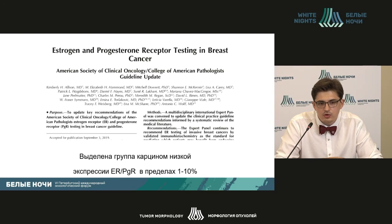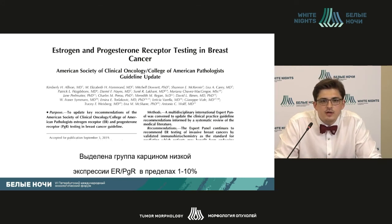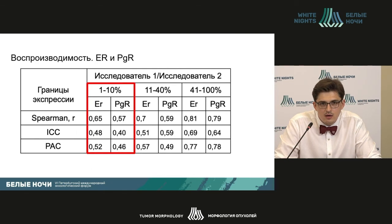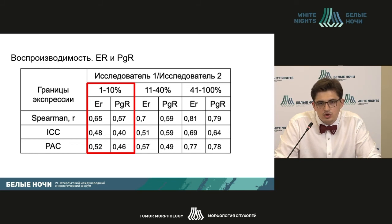Mindful of the new guideline published in September 2019, we identified a low expression group for estrogen and progesterone receptors of 1% to 10%. This group was identified because investigators showed that the benefits of endocrine therapy in those breast carcinomas are limited, and this group requires further study. We studied reproducibility of this indicator and demonstrated low reproducibility ratios in the 1% to 10% group — this is the group with low inter-investigator reproducibility.